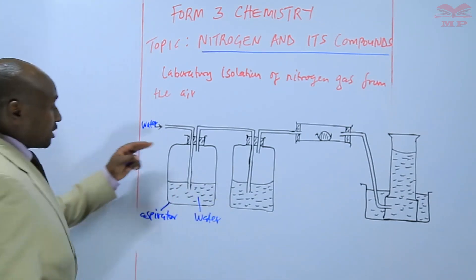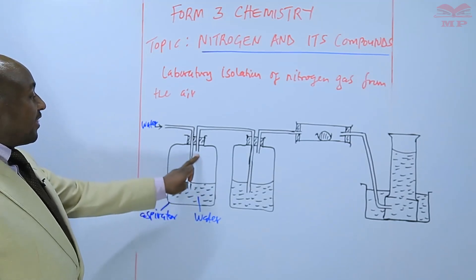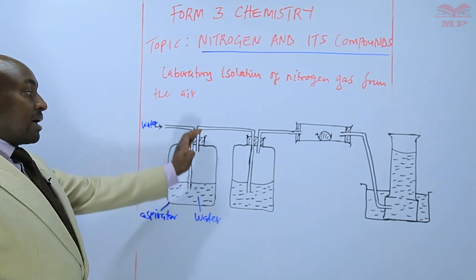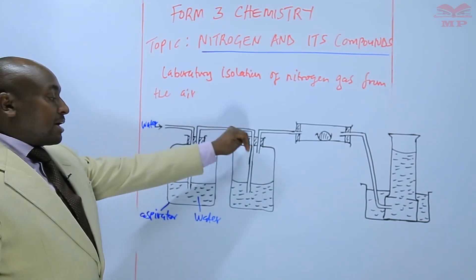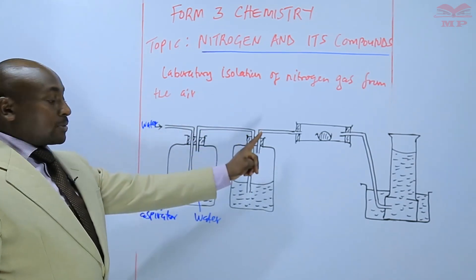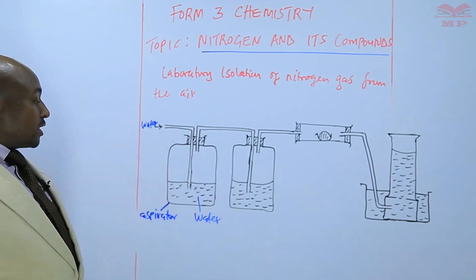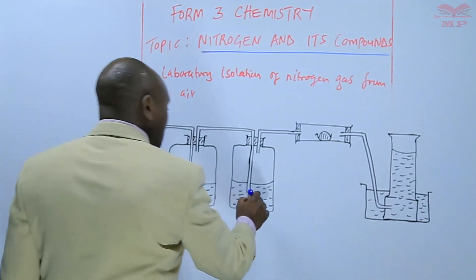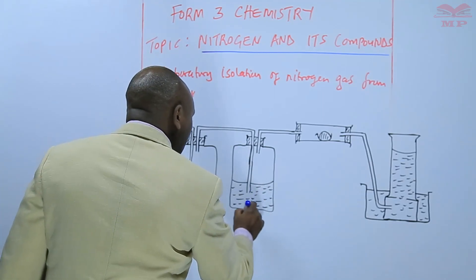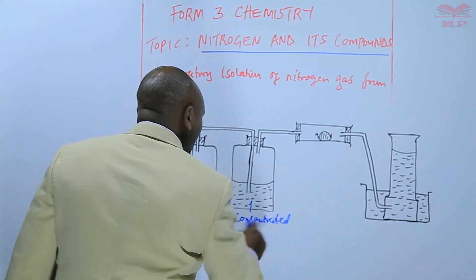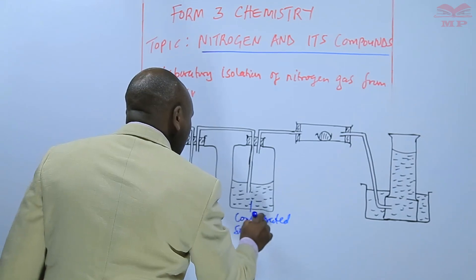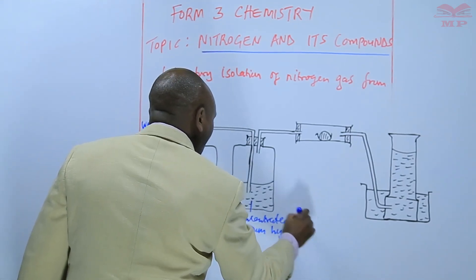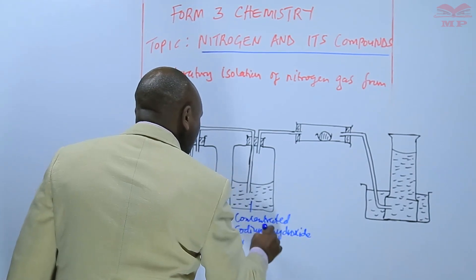the air that was initially inside this jar is expelled, and it is expelled in this direction whereby it gets into the second jar, the second aspirator, which contains concentrated sodium hydroxide or potassium hydroxide.